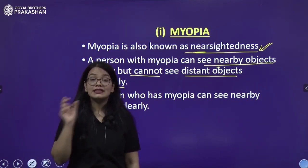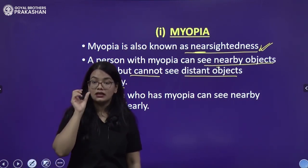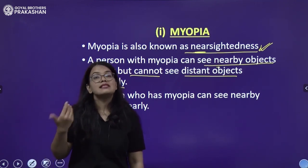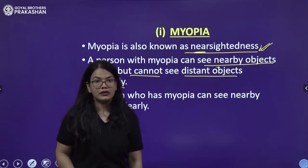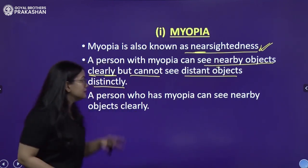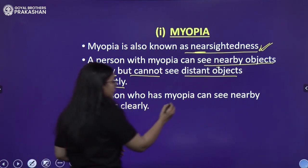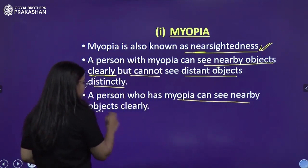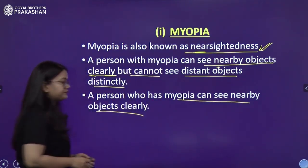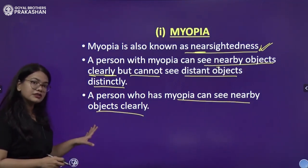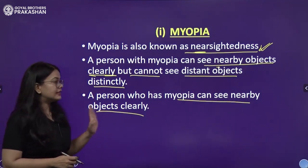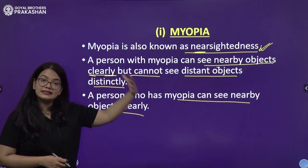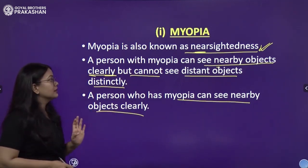That is called myopia or nearsightedness — nearsightedness means things which are near can be seen. A person who has myopia can see nearby objects clearly; only the far or distant objects cannot be seen.